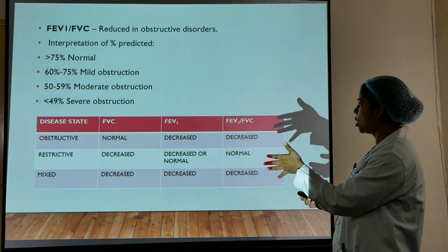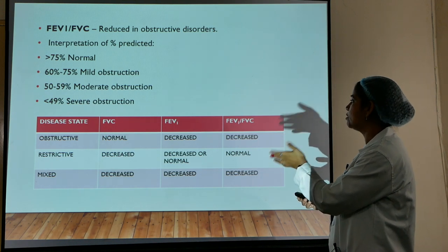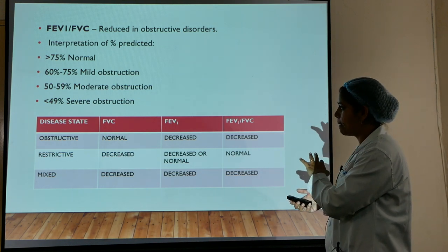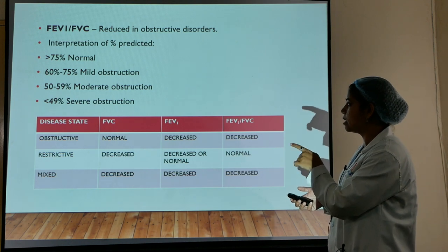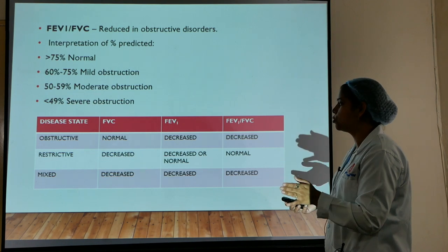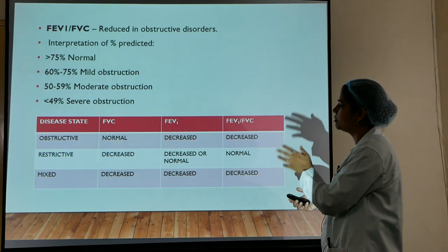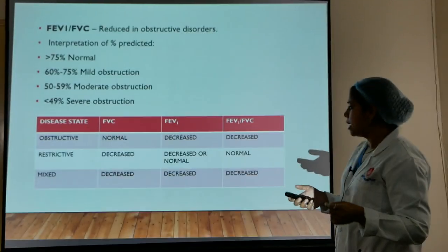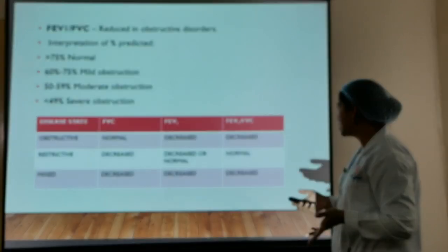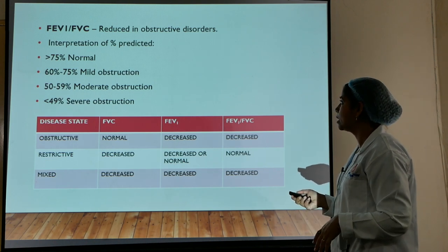The differentiating chart: in obstructive diseases, FVC is normal, FEV1 is decreased, and the FEV1/FVC ratio is decreased. In restrictive diseases, FVC is decreased, FEV1 is decreased or normal, but the ratio essentially remains the same — this is the key differentiating criterion. In mixed disorders, both FVC and FEV1 are decreased and the ratio is also decreased, making diagnosis more difficult.